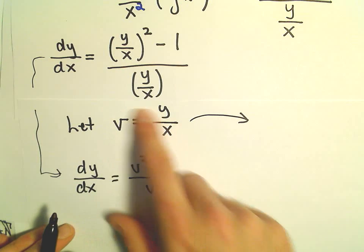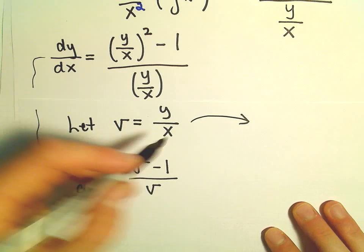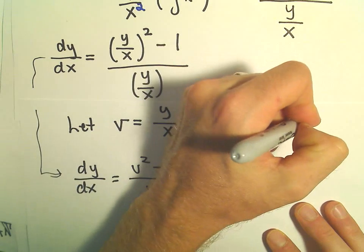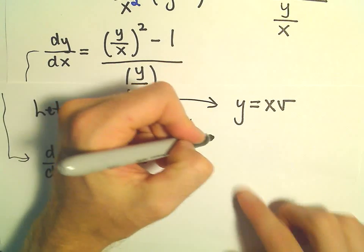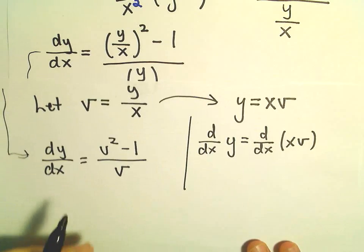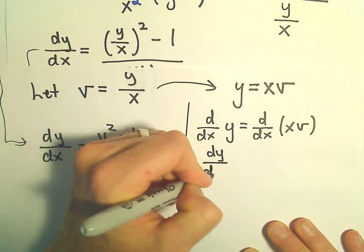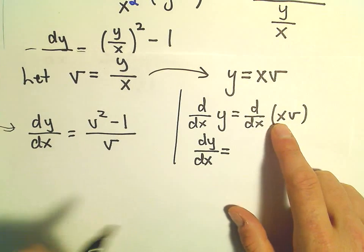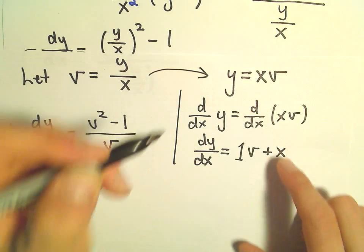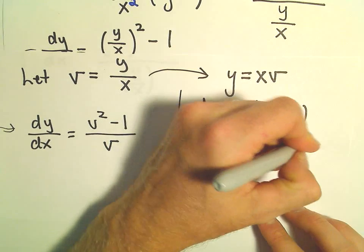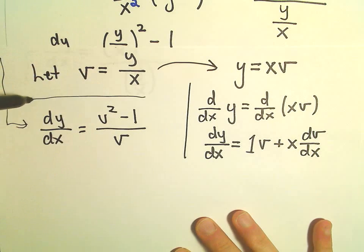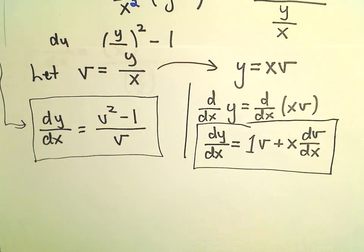We can also manipulate the substitution. We multiply v equals y over x by x to get y equals x times v. Taking the derivative with respect to x of both sides and using the product rule: on the left we get dy over dx, and on the right, the derivative of x times v gives us 1 times v plus x times dv over dx.